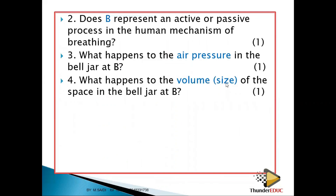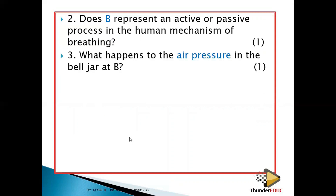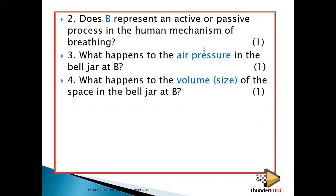What happens to the volume of the space in the bell jar at B? When the diaphragm is pulled down, the volume increases. When volume increases, pressure reduces. So the air pressure reduces while the volume increases.